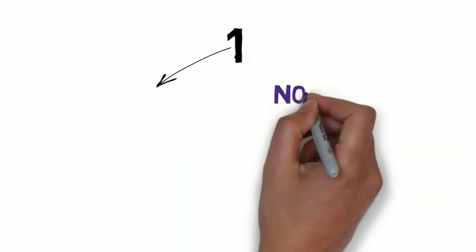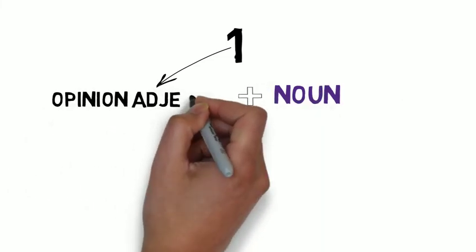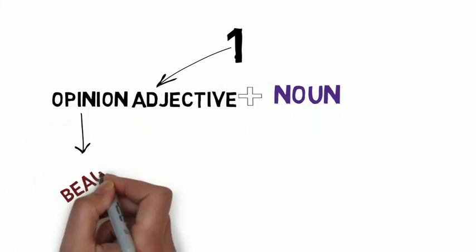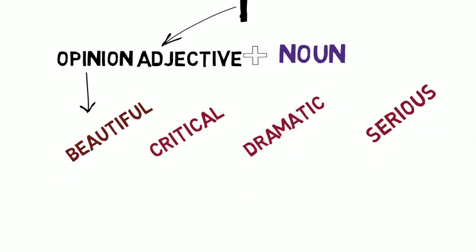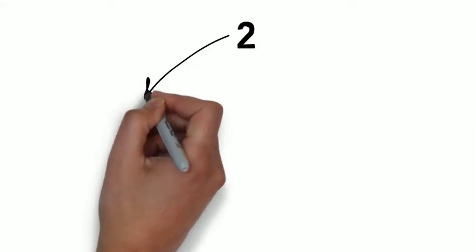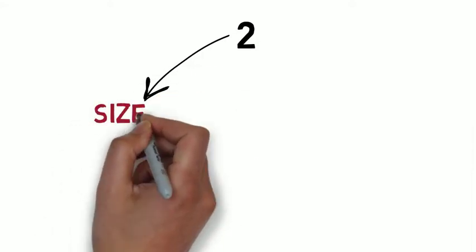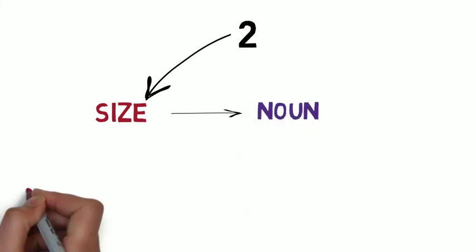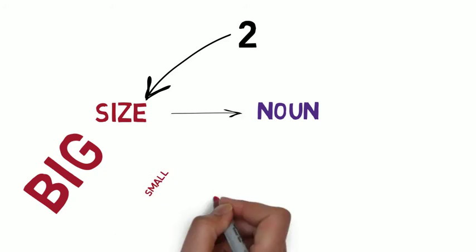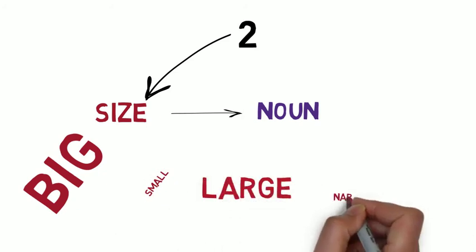Start first by putting before your noun an adjective that expresses your opinion, like beautiful, critical, dramatic, serious, or something else. Then add right after an adjective that tells the size of the noun. Example, big, small, large, narrow, whatever.